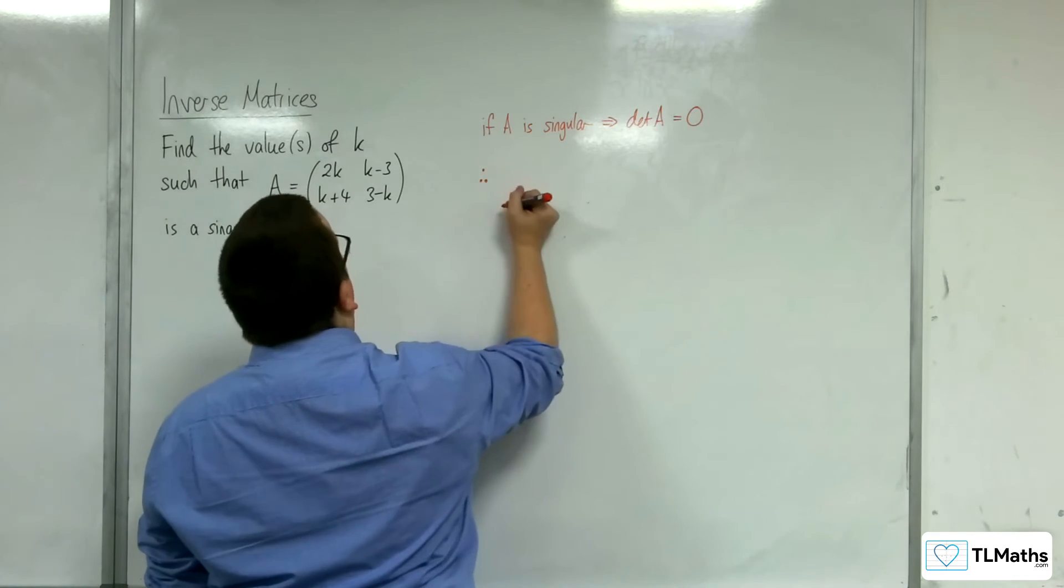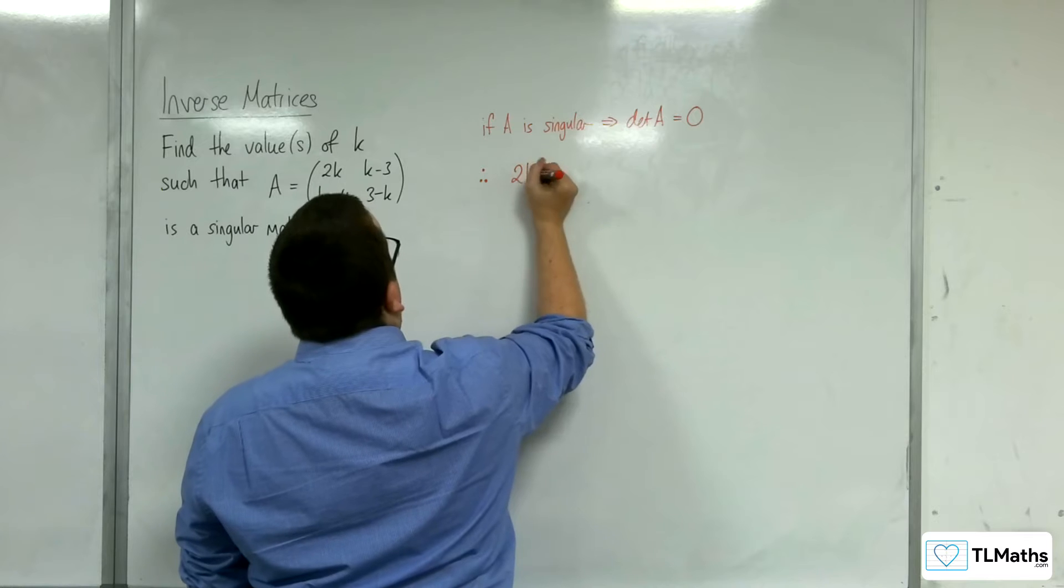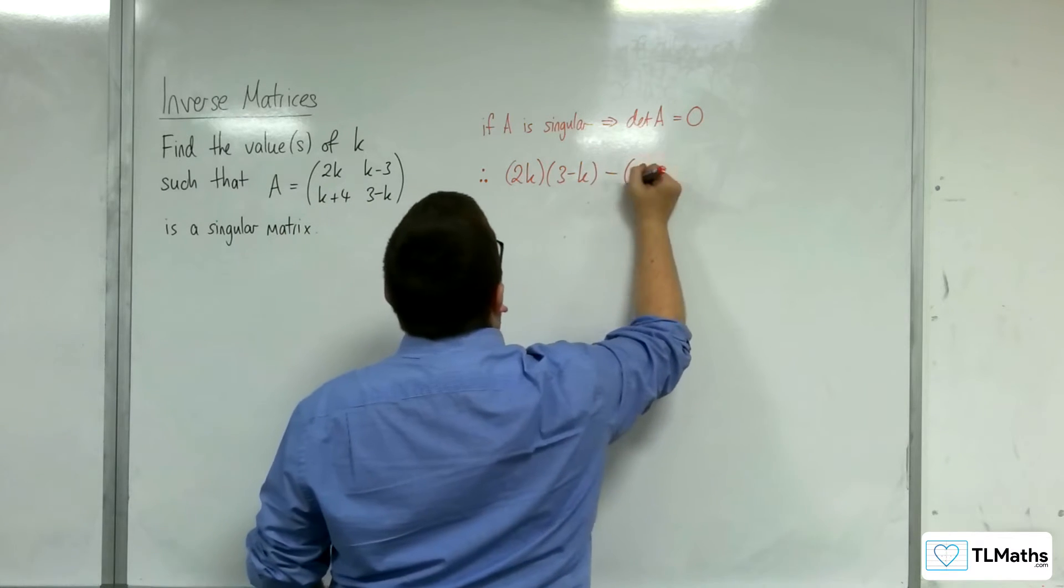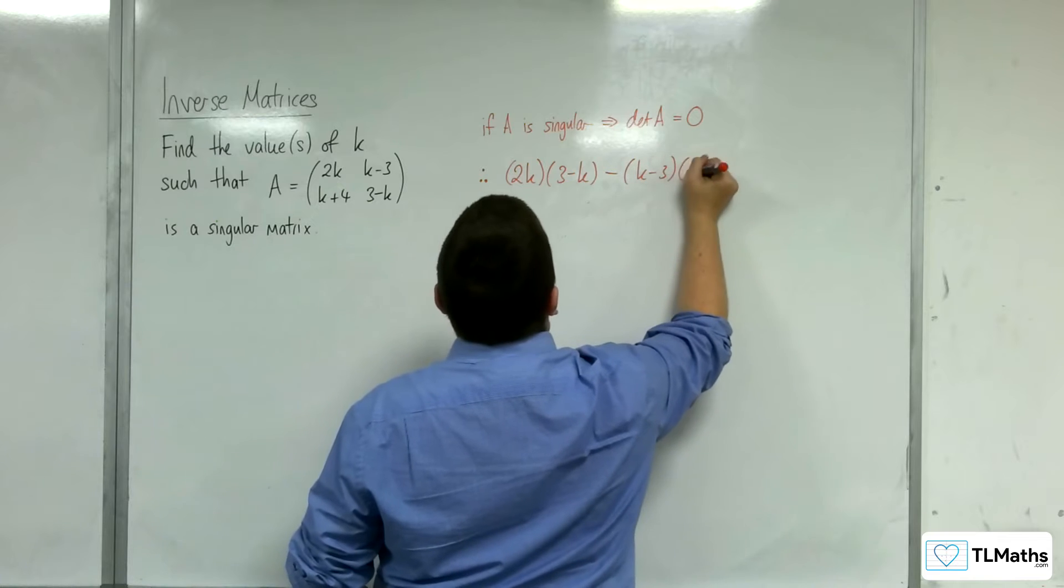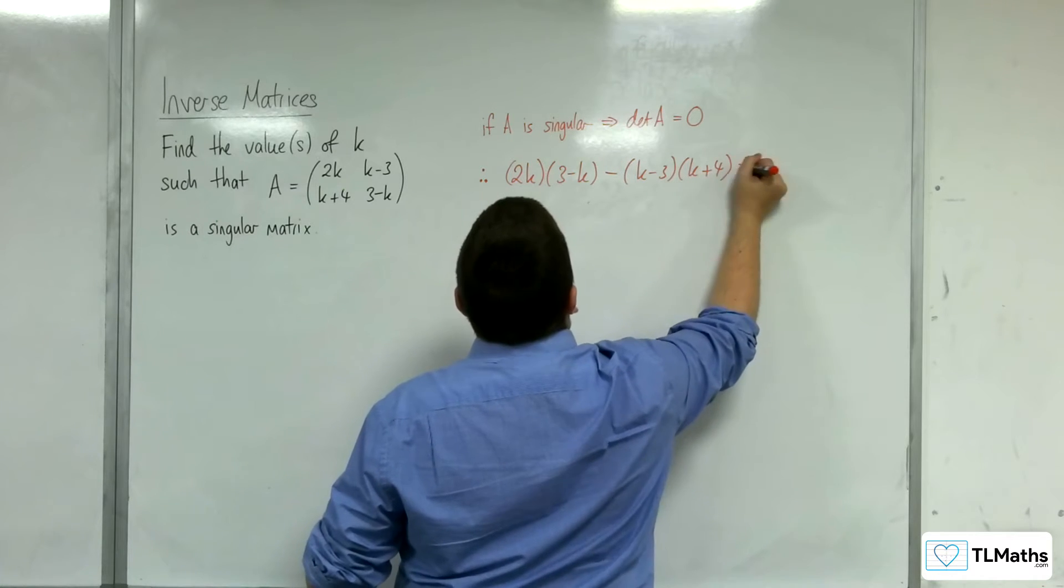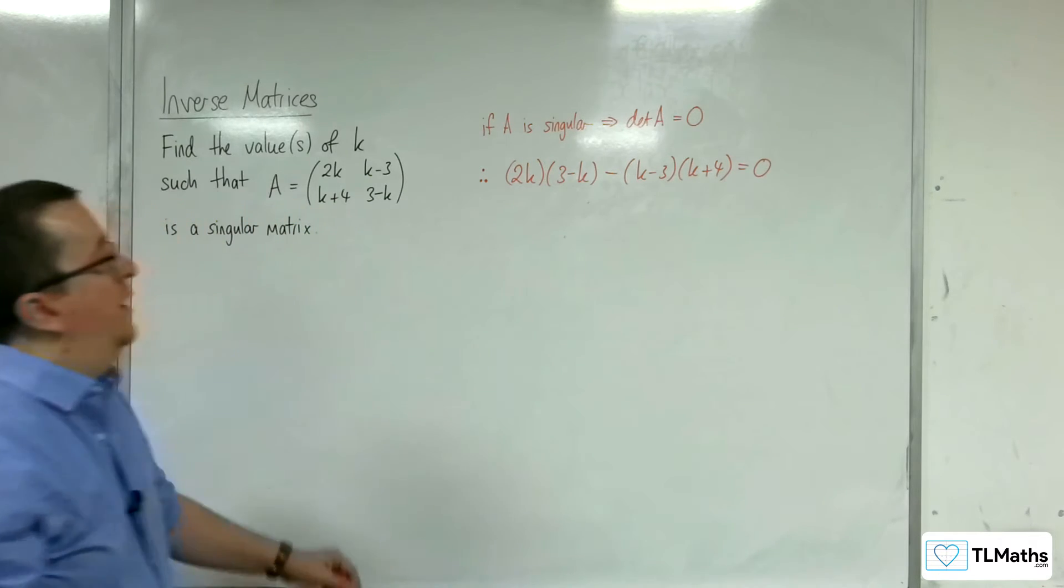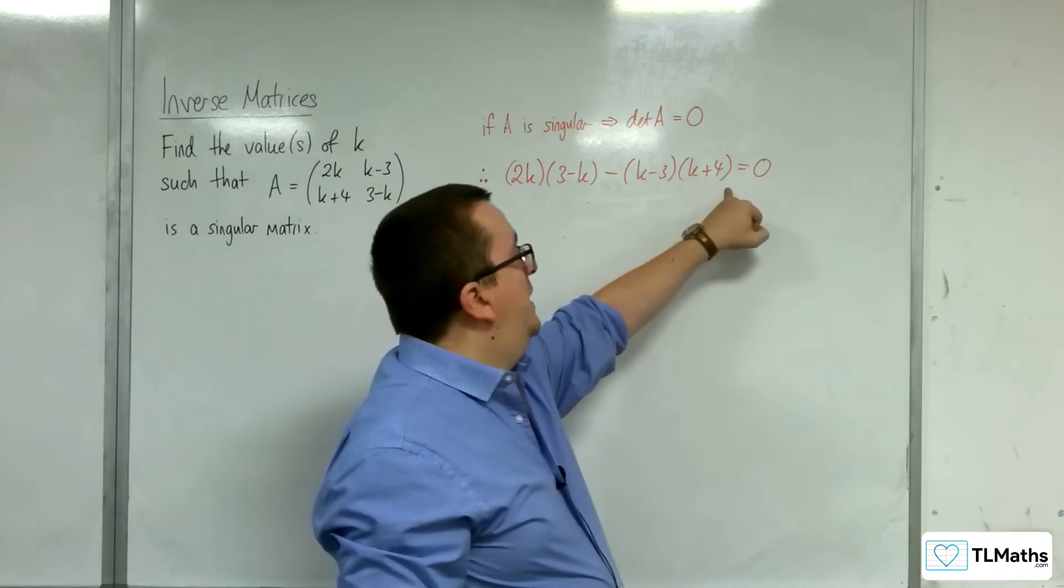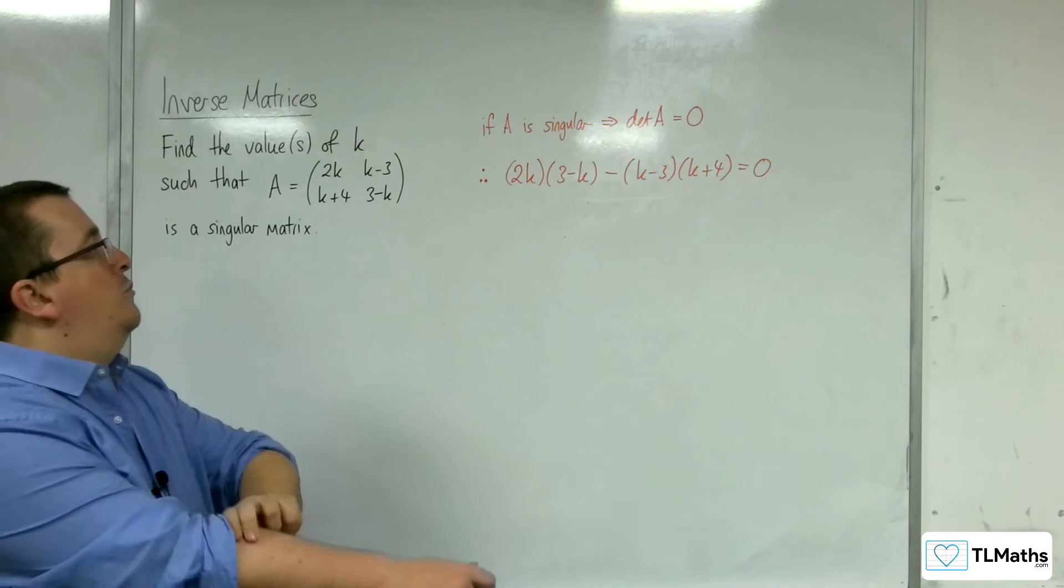Therefore, 2k times 3 minus k, take away k minus 3 times k plus 4, must be equal to 0. The determinant of A is this left-hand side. If it's singular, it must be equal to 0.